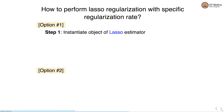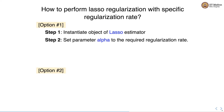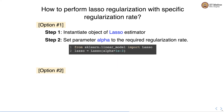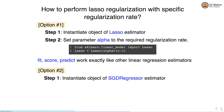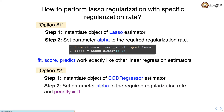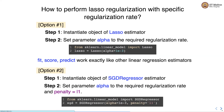Again there are two options. Either we can use the Lasso estimator and set the parameter alpha to the required regularization rate, imported from sklearn.linear_model. In option two, we can instantiate an object of the SGDRegressor estimator and set the parameter alpha to the required regularization rate and set penalty to l1.